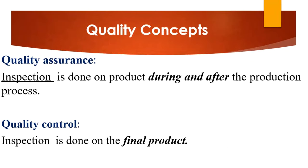What's the difference between quality assurance and quality control? They both have to do with inspection of goods, but the main difference is that with quality assurance, the inspection is done during and after the production process, whereas quality control is only done on the final product.